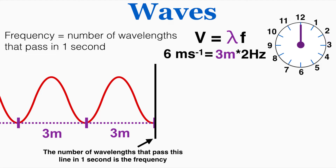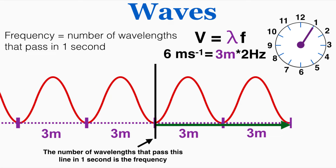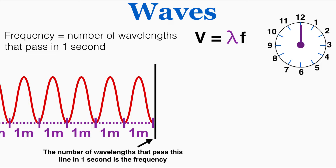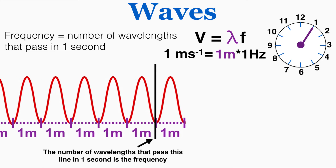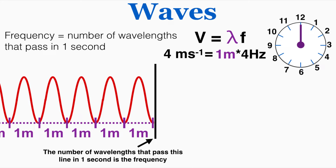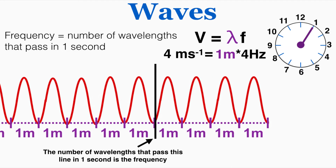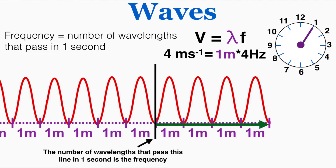If I allow two wavelengths to pass in one second — because that's the frequency — the wave traveled six meters in one second, so the velocity is six meters per second. I can also change the wavelength to one meter, give it a frequency of one Hertz, and see that the velocity is one meter per second. Finally, with a frequency of four and a wavelength of one meter, the velocity is frequency times wavelength, giving four meters per second.